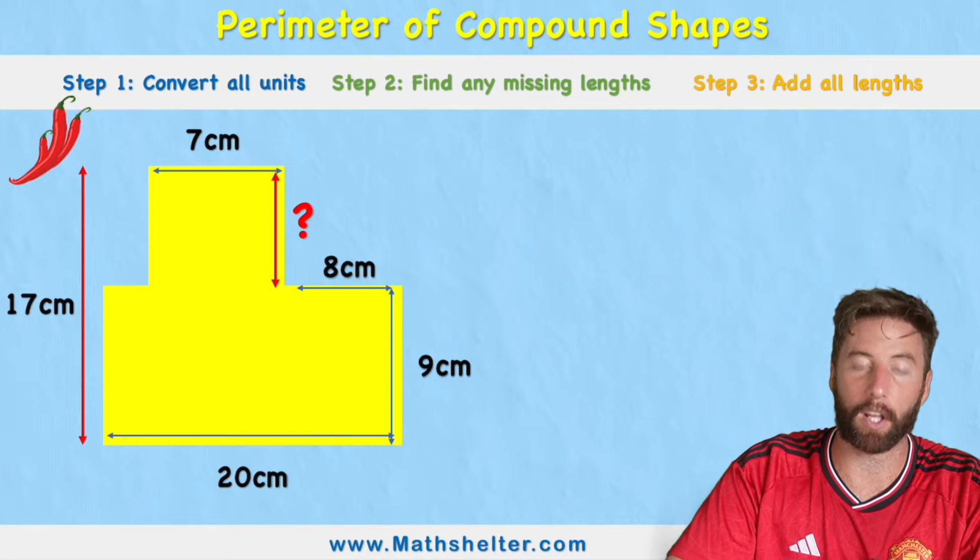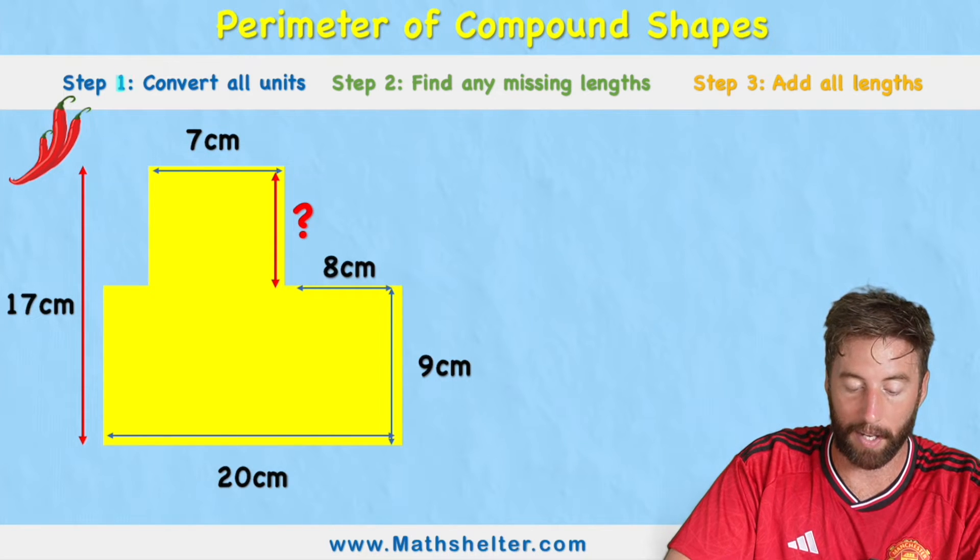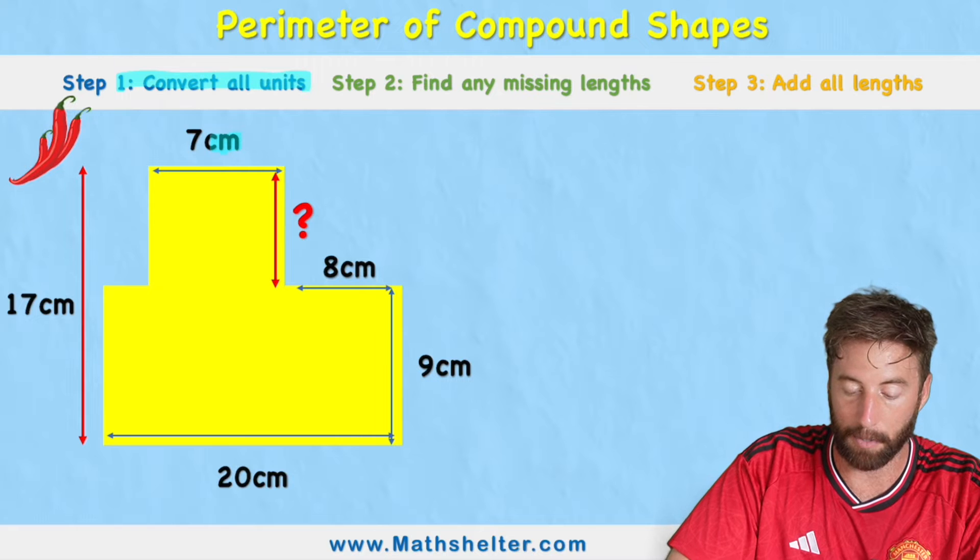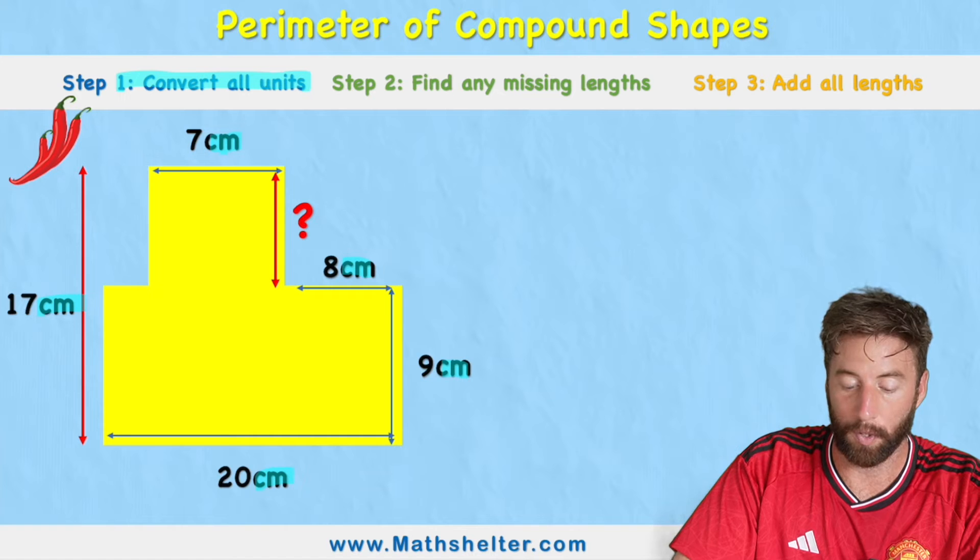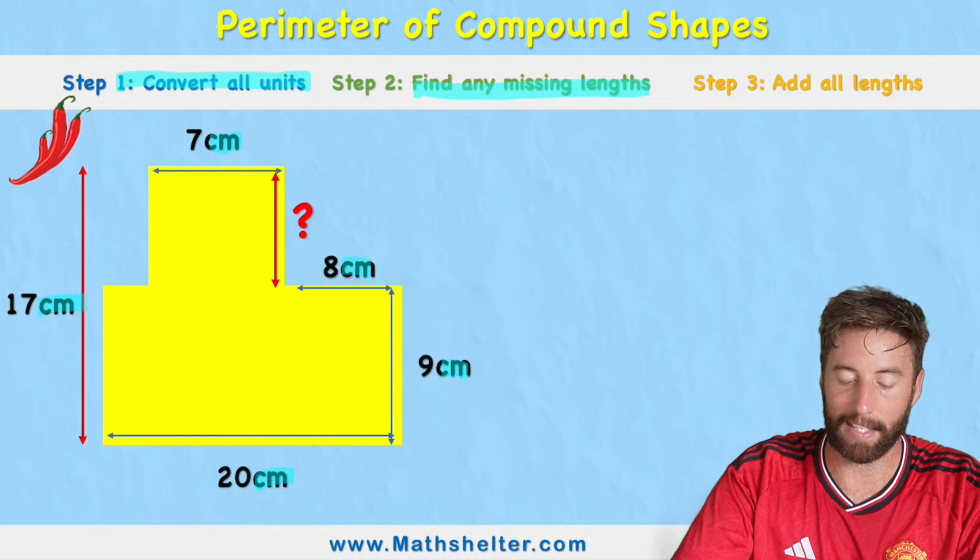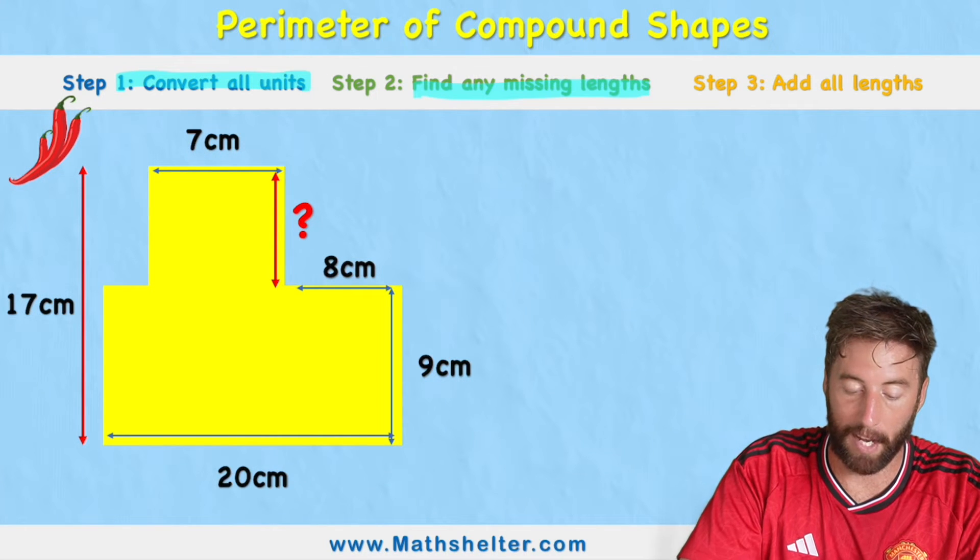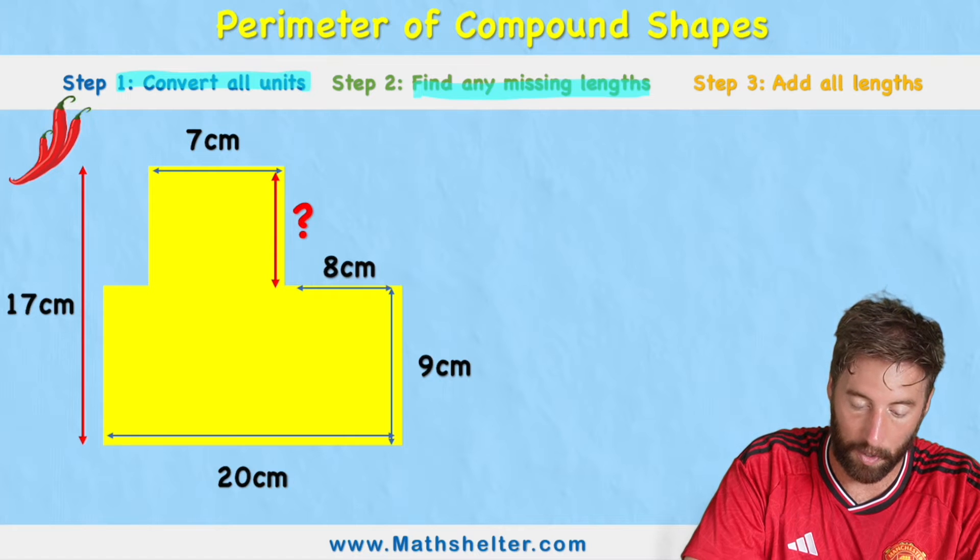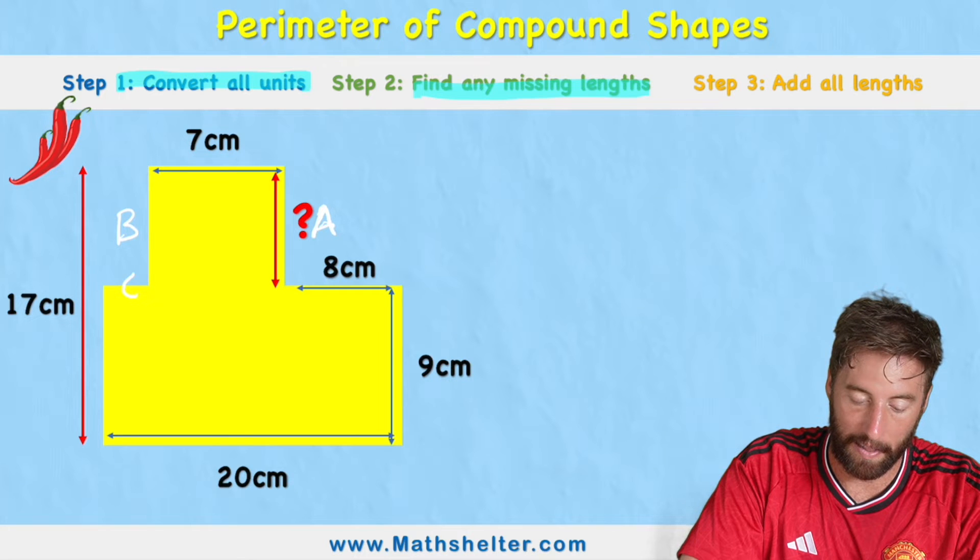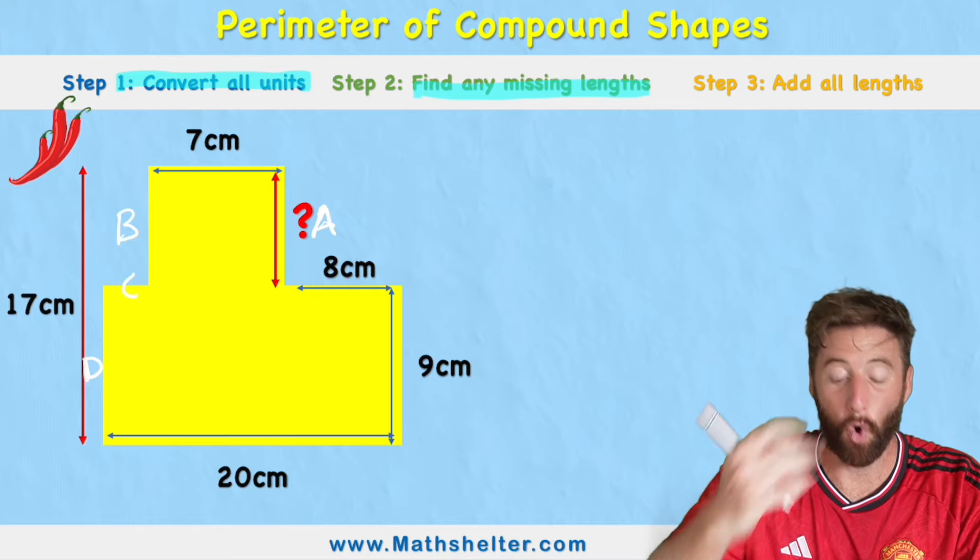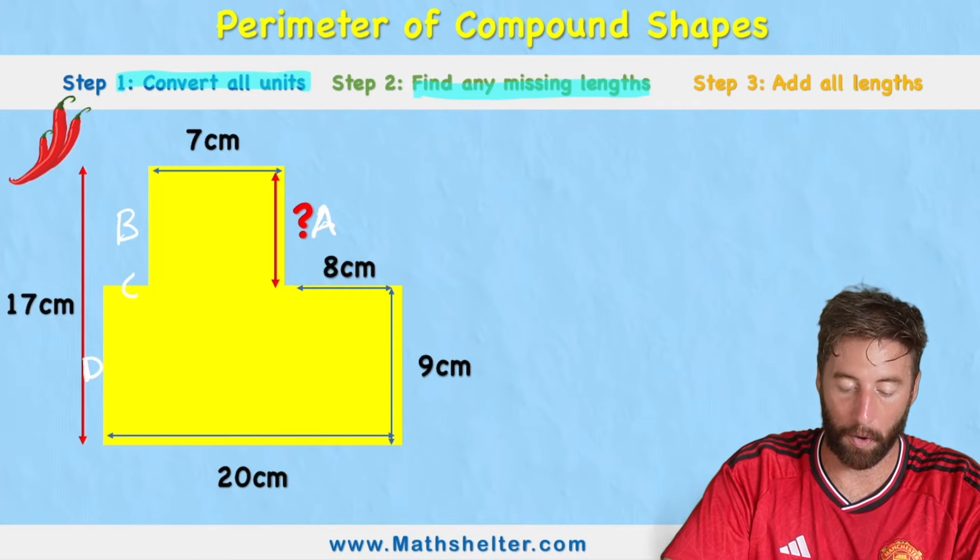First of all, we're going to convert our units. Well, in this case I see everything is in centimeters, so that's not necessary. I can skip straight to stage two, which is find any missing lengths. Now for organization, I'm going to label my lengths here. I'm going to call this length A and we'll call the opposite one B, this one C, and then this one down here as D. So we need to find four missing lengths here. How are we going to do it?